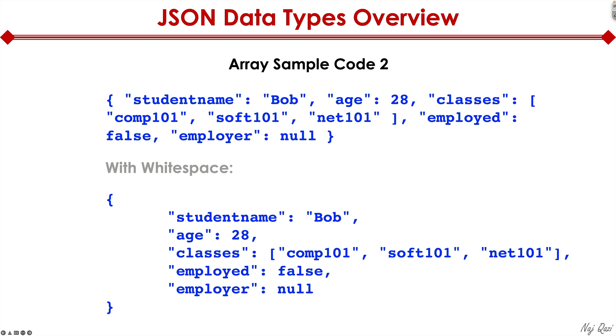I'm saying I have a student name Bob, age 28, classes that this student is taking comp 101, soft 111, net 101. This student is not employed, employment is false, and employer is null because they're not employed, so of course there's no employer to report. One interesting thing about this example is check this out, we have all the different data types covered here. We got the string data type, we got the number data type, we got an array here, we got the boolean data type, and then we also got the null data type.